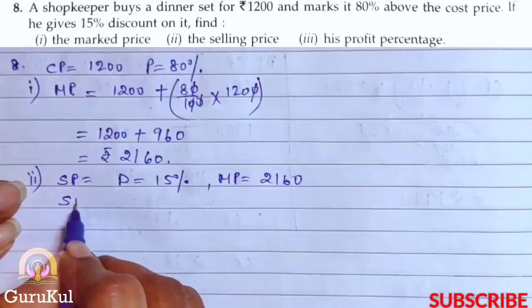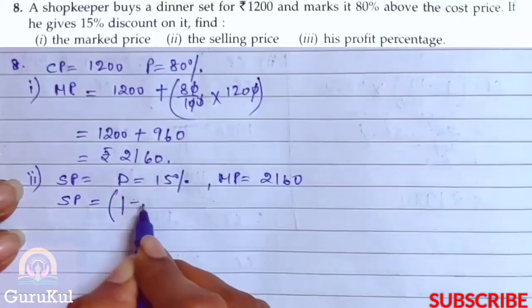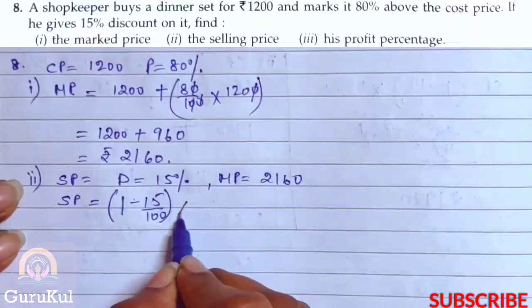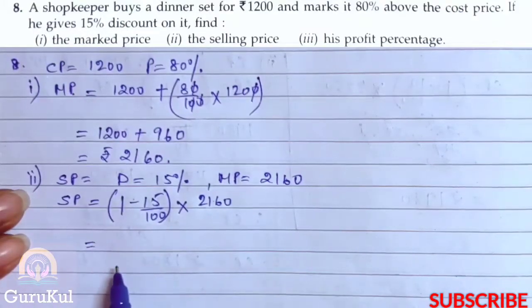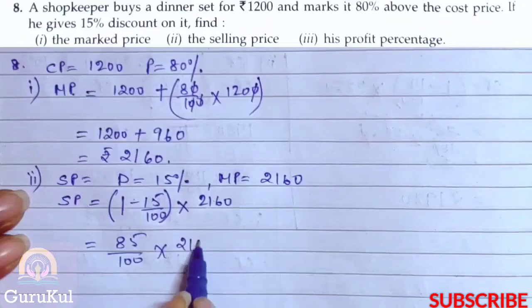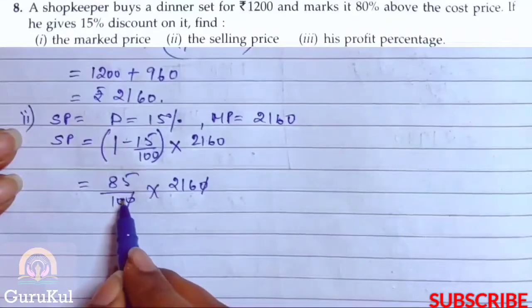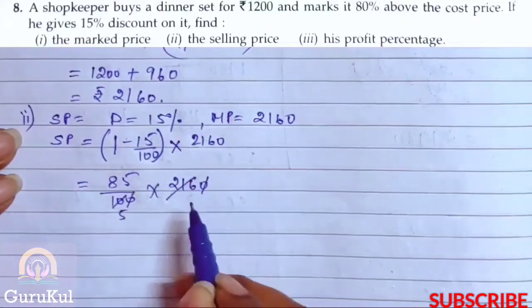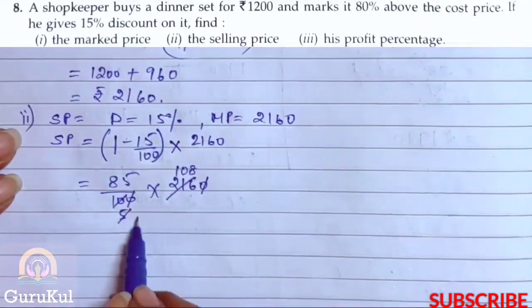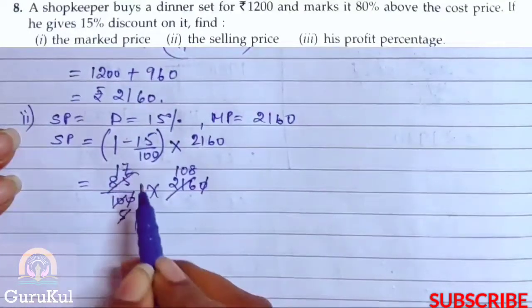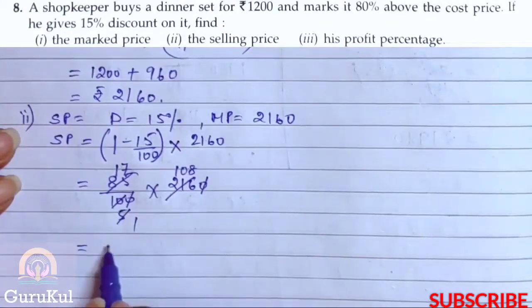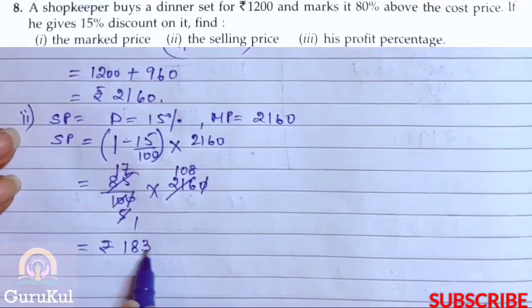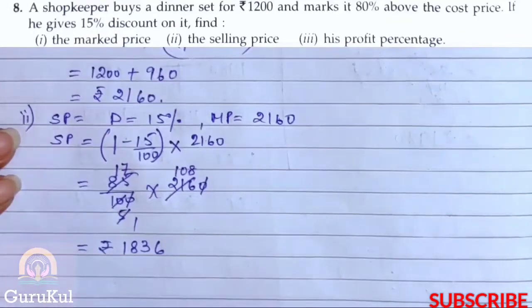SP is equal to (1 minus 15/100) into the marked price. After taking out the LCM, it will be 85/100 into 2160. Zeros got cancelled. Two fives are 10, five ones are 5, giving us 17. So 17 into 108 gives us the selling price of rupees 1836.